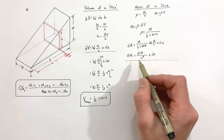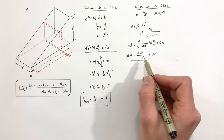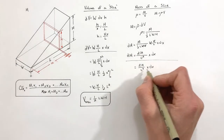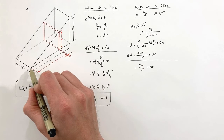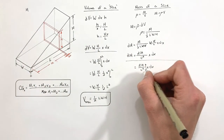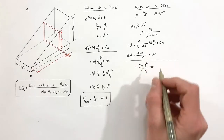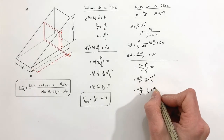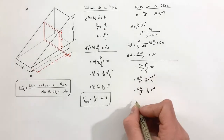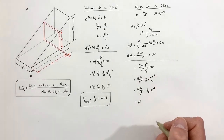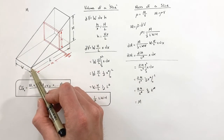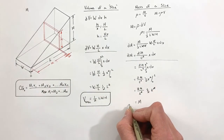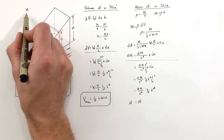Let's integrate dm from 0 to L just to verify. With the constant out front, we integrate x dx and a bunch of terms cancel — the one-half and two cancel — and we're left with m. This confirms that when we add up the mass of all our tiny slices along the entire wedge, we get the total mass m, just as expected.